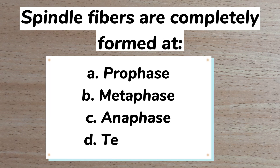Number 9. Spindle fibers are completely formed at: A prophase, B metaphase, C anaphase, D telophase. Answer: B metaphase.